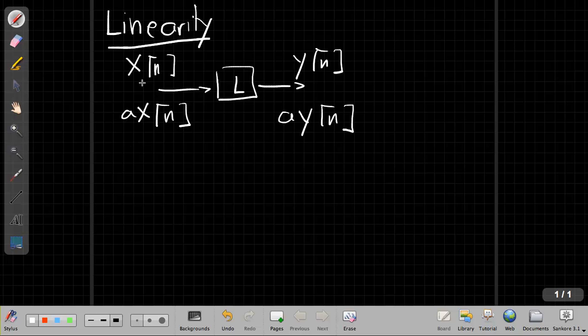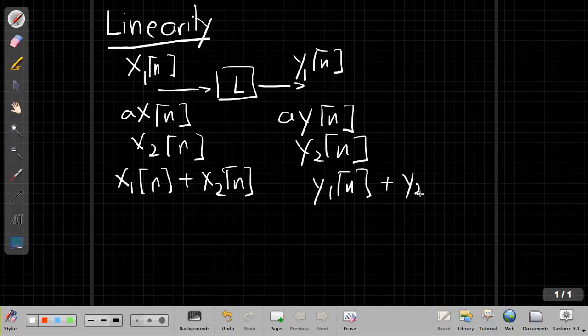If I have a couple of inputs, maybe I'll call this one x1 and this one y1. I have a different input-output pair, I put in x2 and I measure that y2 comes out, and then I say, well what if I put in a new input that's the sum of both of these inputs? Then the output needs to be the sum of the two outputs I measured before.